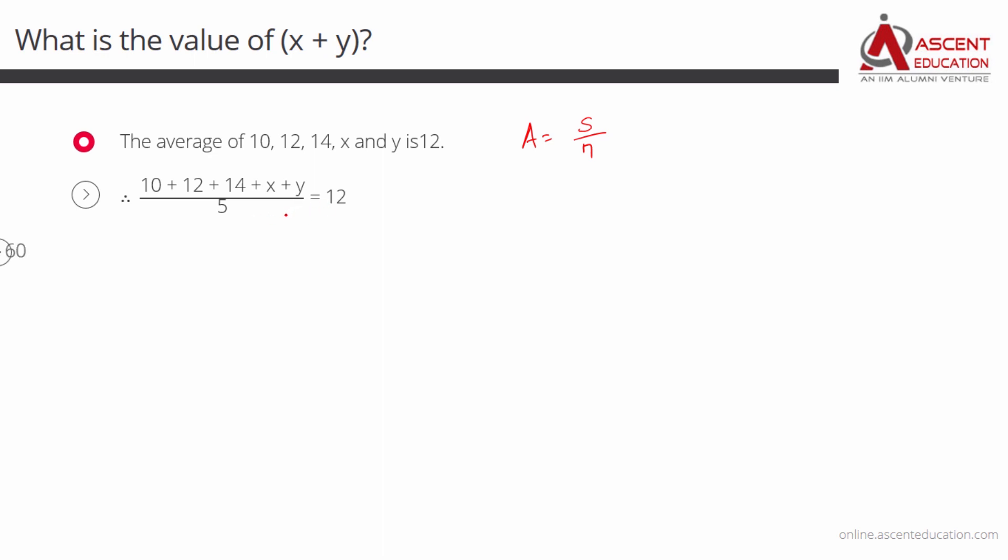Once we cross multiply this, this is what we are going to have. 10 plus 12 plus 14 plus x plus y is 5 into 12, which is equal to 60. So, sum of these five numbers is equal to 60.